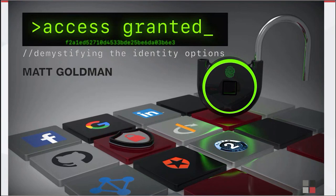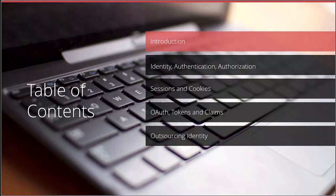Good evening everyone, thanks for coming. The topic this evening is 'Access Granted' — I'm going to be talking about authentication, authorization, and identity, and what the options are for enabling those things in the software you're building. We'll look at the pros and cons. The agenda: we'll start with an introduction, explain what identity, authentication, and authorization mean, then talk about sessions and cookies, then OAuth tokens and claims, and finally options for outsourcing identity.